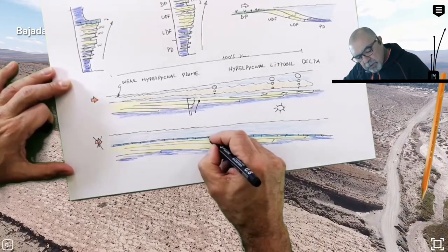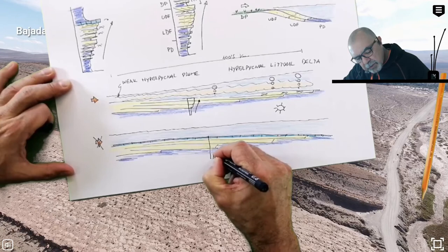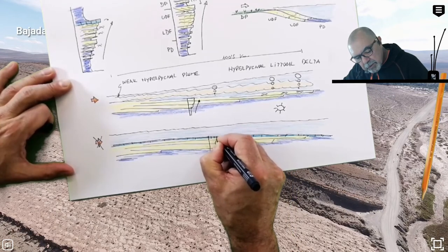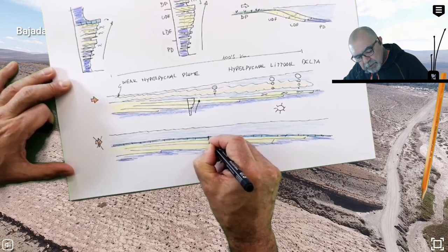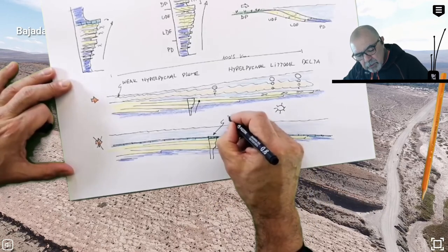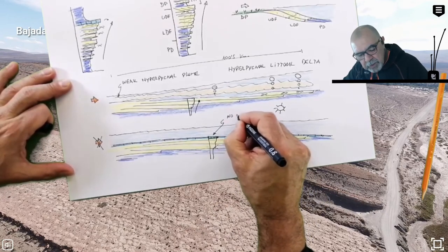So this is the explanation of many parasequences we can find in the stratigraphic rock record, in which we can recognize this coarsening upward succession and a limestone or just a sharp boundary on top.